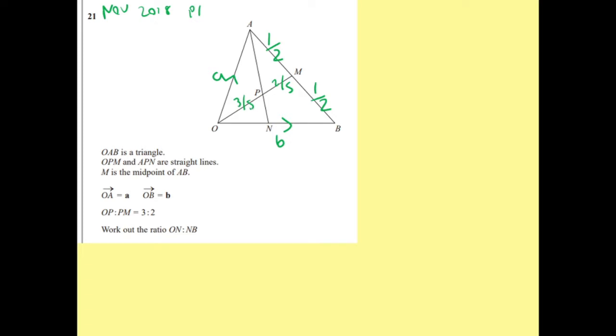Okay, so let's see what we can work out. I know that AB is minus A plus B. I know that AM is going to be half of that. So minus a half A plus a half B.